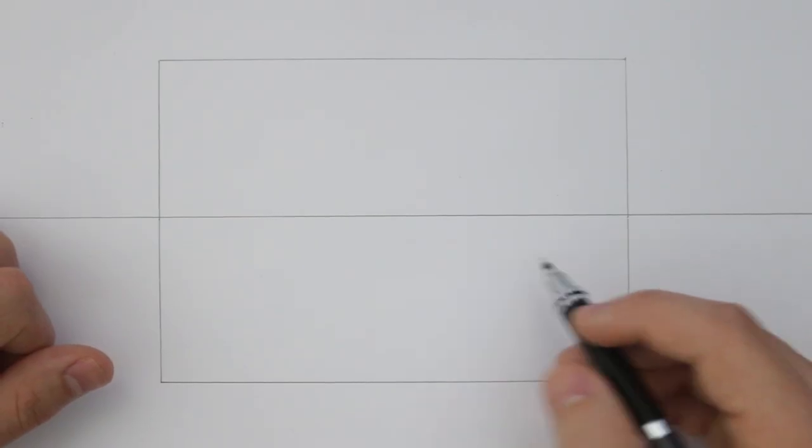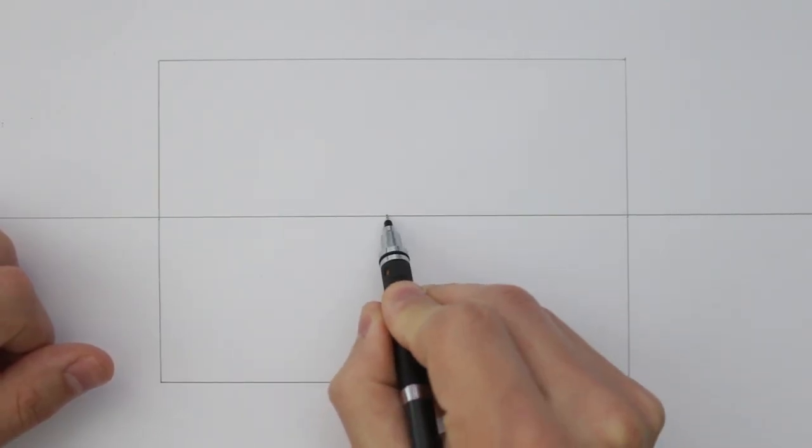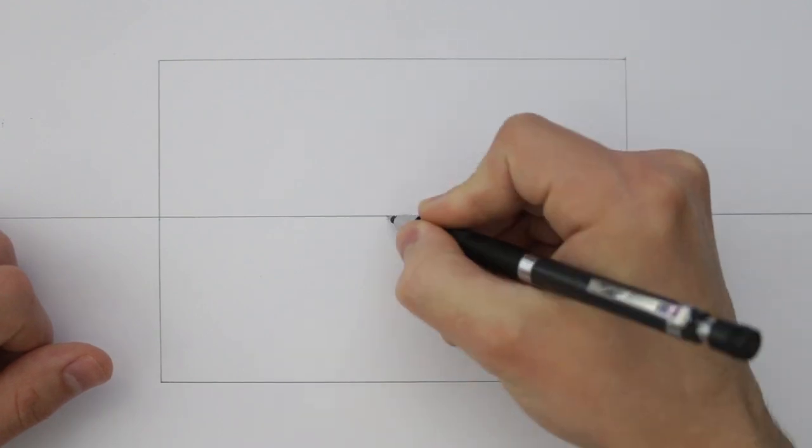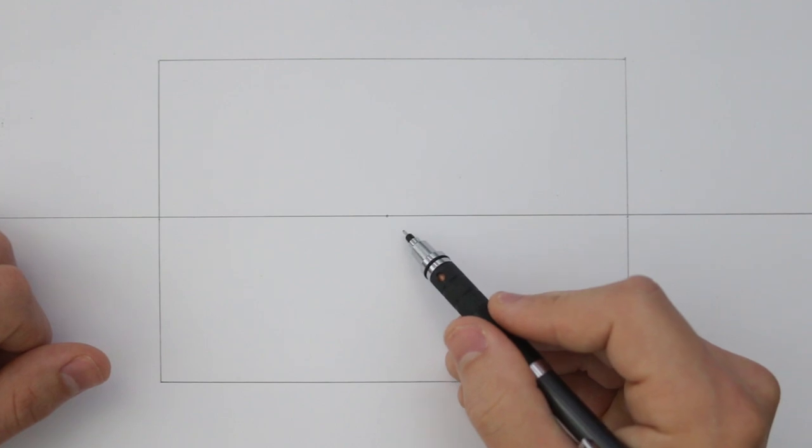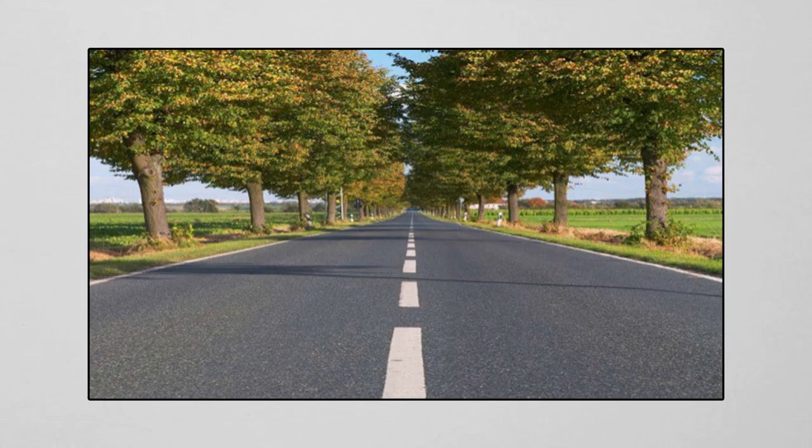Okay, so going back to what we were previously discussing: a vanishing point is a point of convergence in which the receding parallel lines diminish. This is what gives our drawing that three-dimensional appearance. It is also evident in real life.